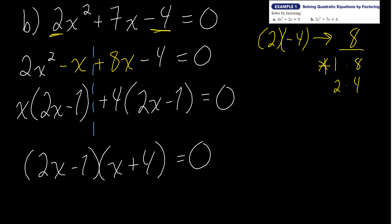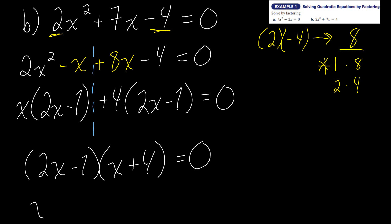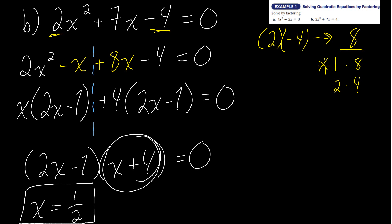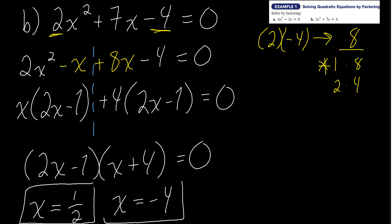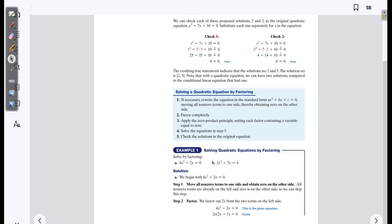Setting each factor equal to zero: 2x minus 1 equals zero gives x equals one-half, and x plus 4 equals zero gives x equals negative 4. Those are the solutions. That wasn't too bad — 13 minutes in and one example down. Today is going to be a long one.